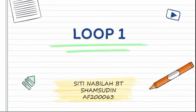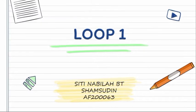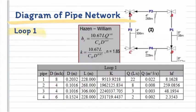Assalamualaikum, I am Seti Nabila Binti Shamsuddin and now I will explain for loop 1. This is the diagram of pipe network for loop 1. Loop 1 consists of 4 pipes. The diameter and length are already given in the equation, so now we have to assume Q. Next we need to find k and hf using the formula given.